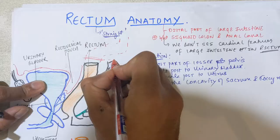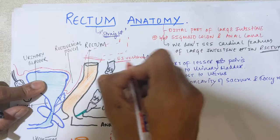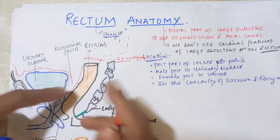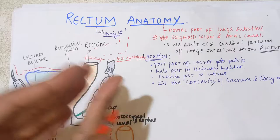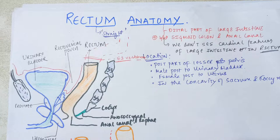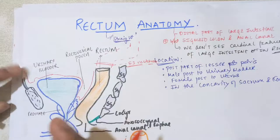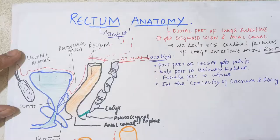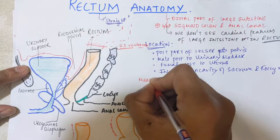The recto-sigmoid junction is present at the S3 vertebra level, which marks the beginning of the rectum. The rectum continues downward from S3 till the coccyx, lying anterior to the lower sacrum — S3, S4, S5 — and the full coccyx. The sacrum forms a concavity posteriorly, and the rectum sits within that concavity.